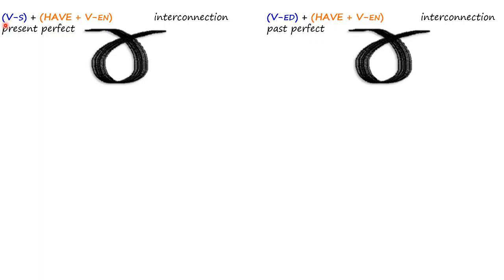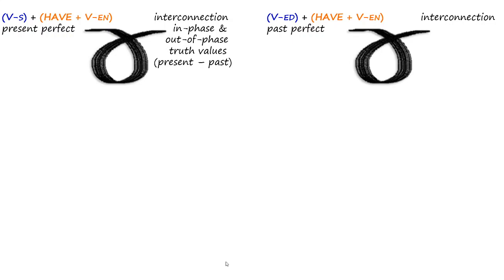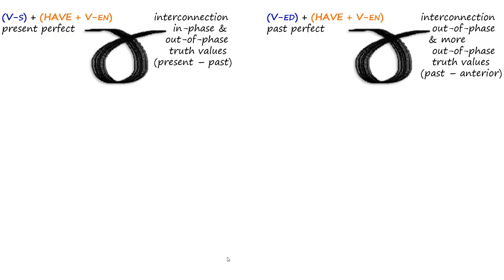We have here the respective formulas. VS plus HAVE plus VEN is the formula for the present perfect, and the formula for the past perfect is VED plus HAVE plus VEN. The next thing worth pointing out is that obviously when the perfect is associated with the present, the interconnection is slightly different from the one we have when the perfect is associated with the past tense.